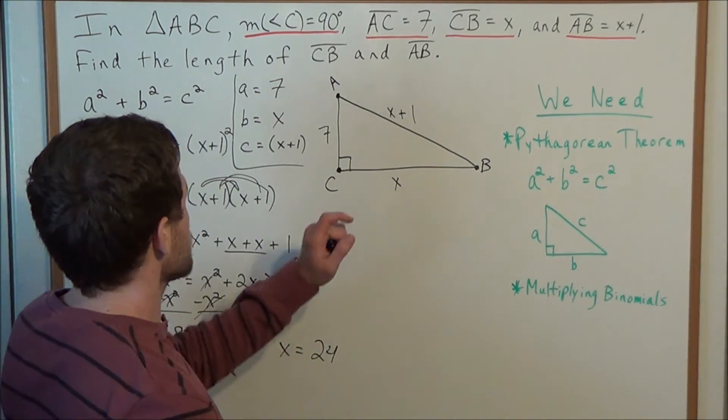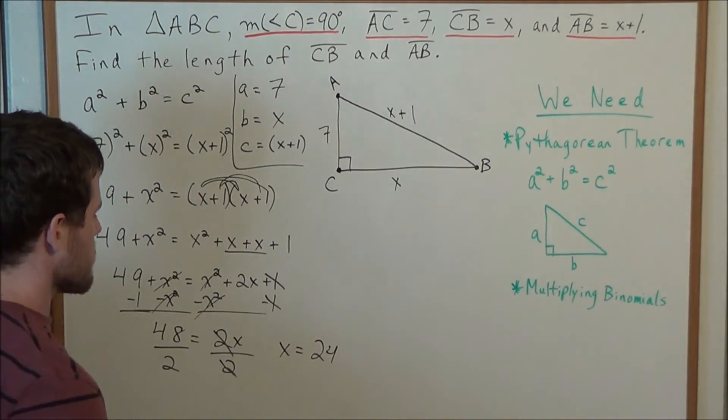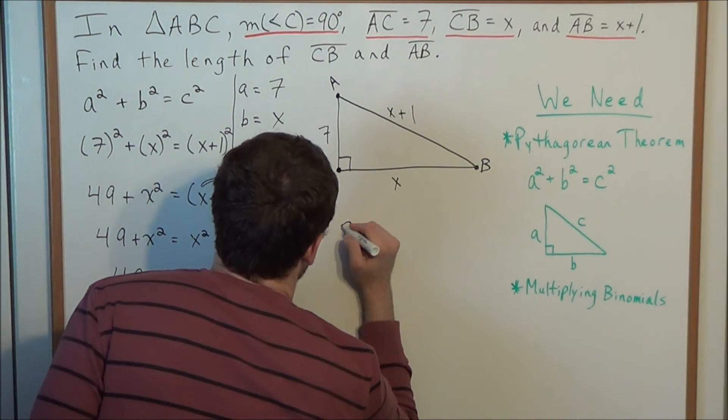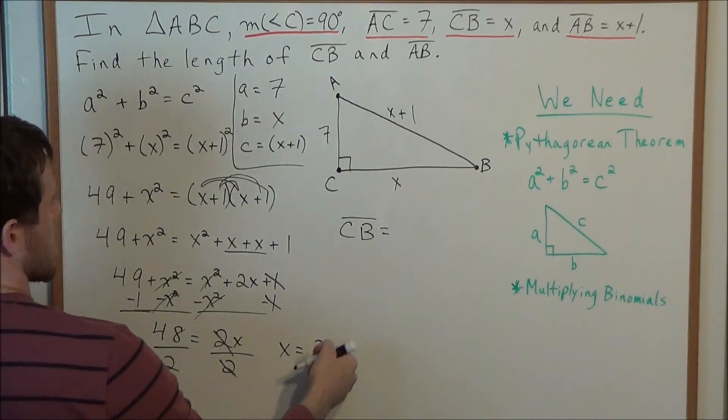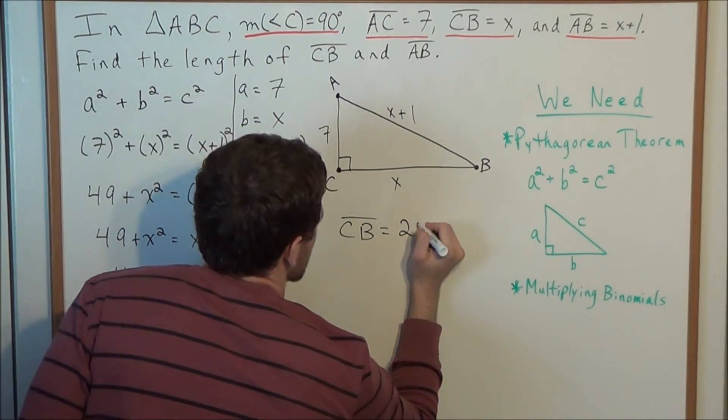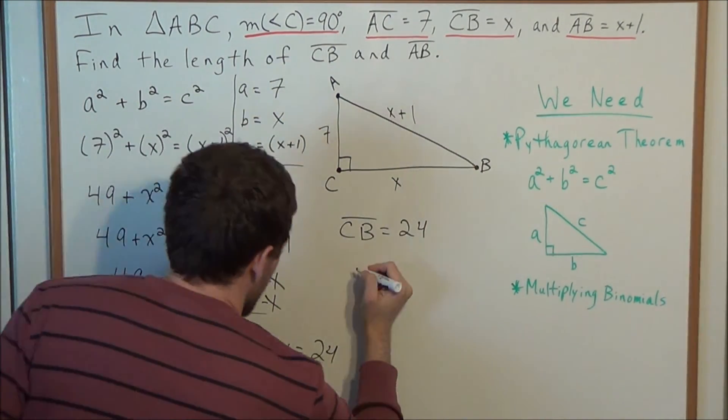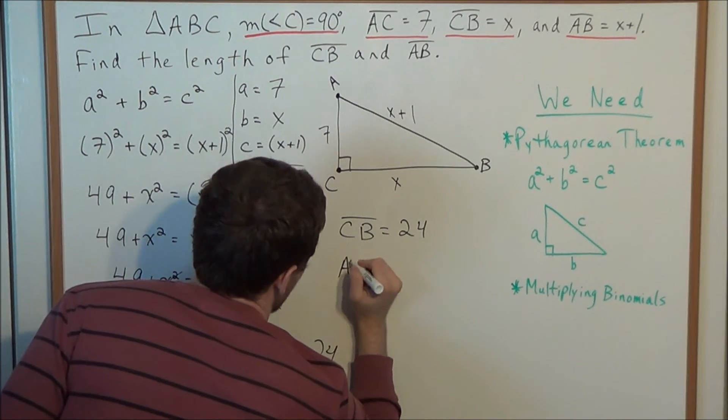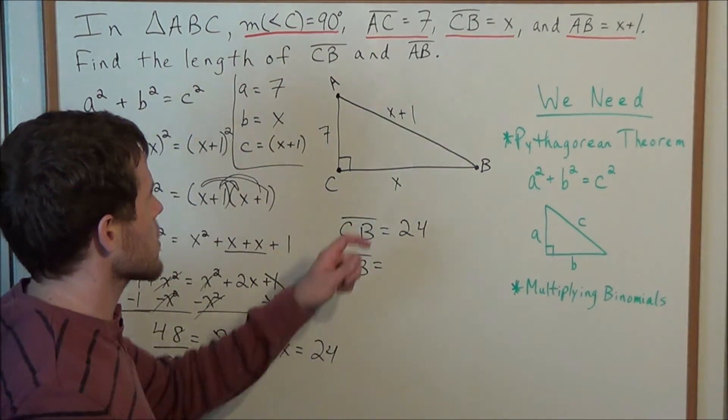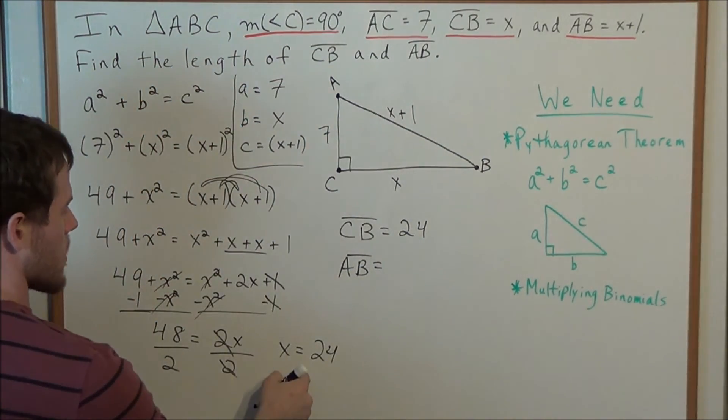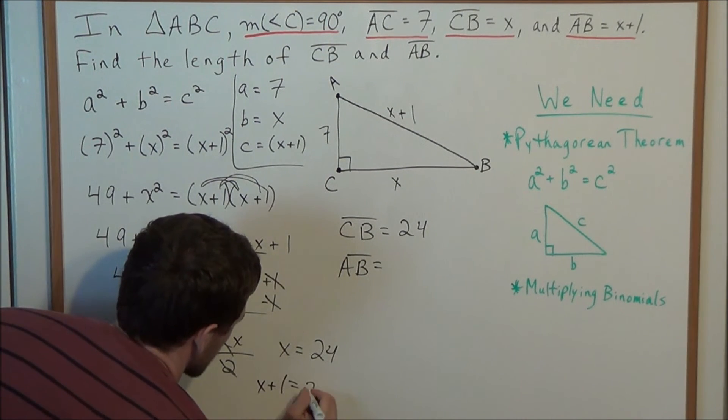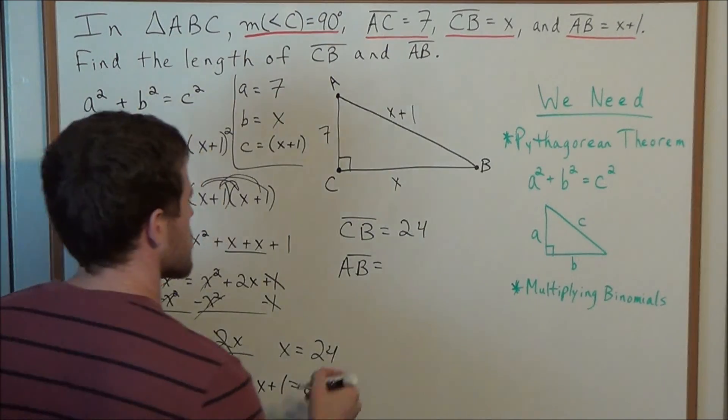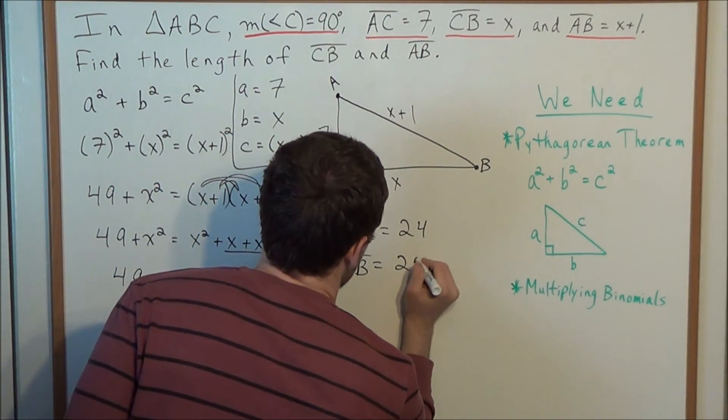And this tells us that X equals 48 divided by 2 is 24. So side length CB, we have that side length CB is equal to X. So that side, the length is 24. And side AB, the hypotenuse, has a side length of X plus 1. But if X is 24, then X plus 1 will be 25. So this side length is 25.